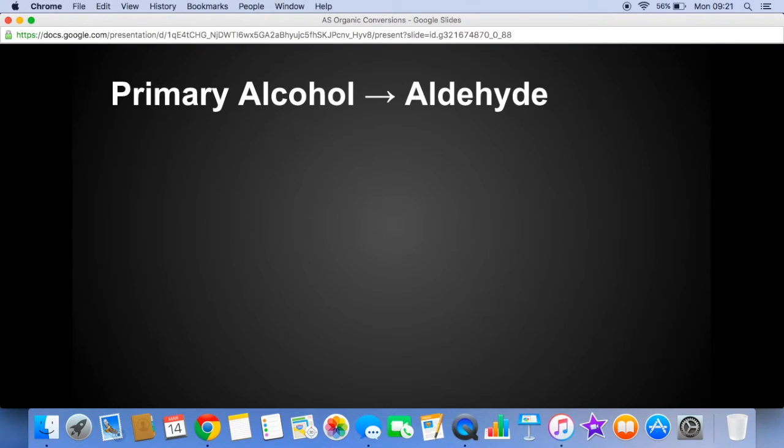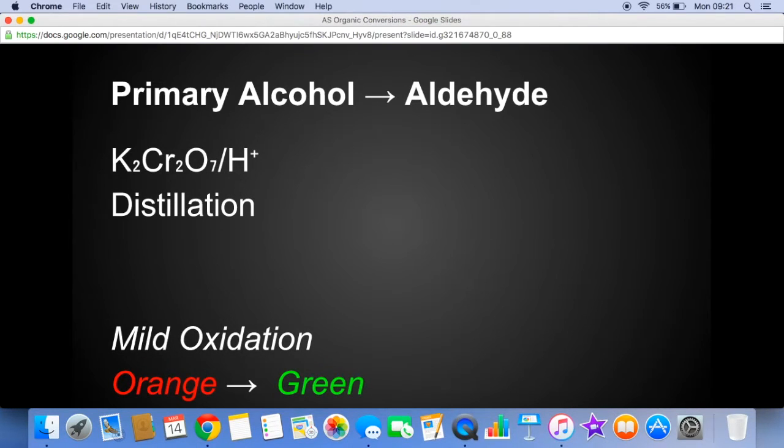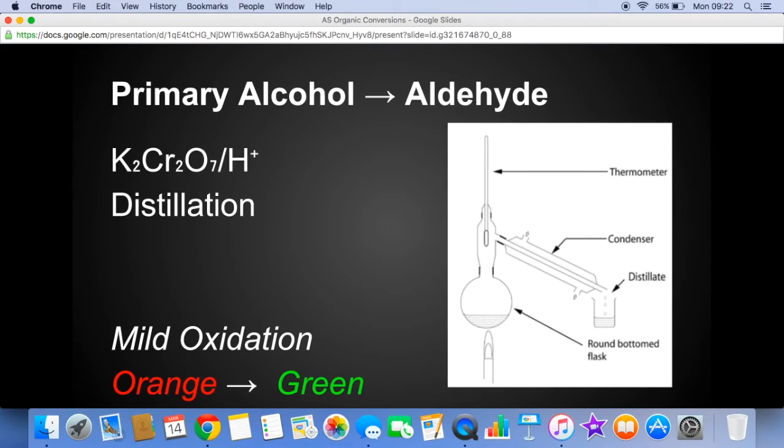Primary alcohol to aldehyde. Acidified potassium dichromate and you would use distillation. So that's an example of mild oxidation and there's a colour change associated with that reaction, orange to green. And there's a picture there of some distillation apparatus. So essentially as soon as the aldehyde is formed it vaporises, travels up here and then escapes down the condenser tube and it's condensed back into liquid by the cold water that's running around the outside of this inner tube. And so your aldehyde distillate would arrive in this flask here.